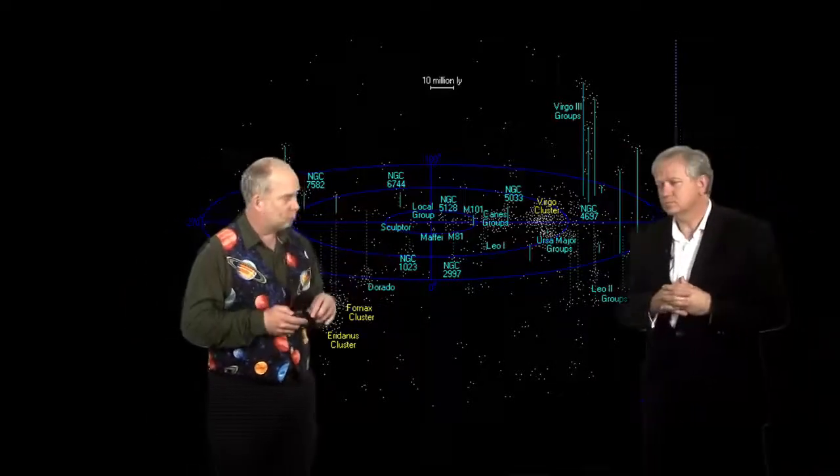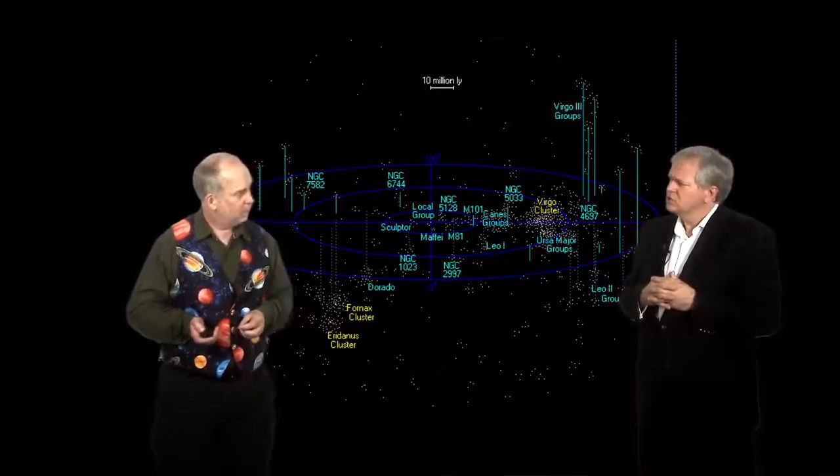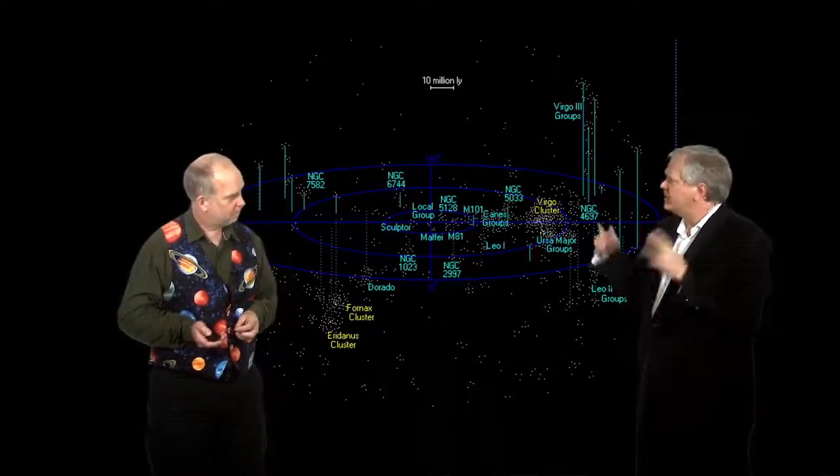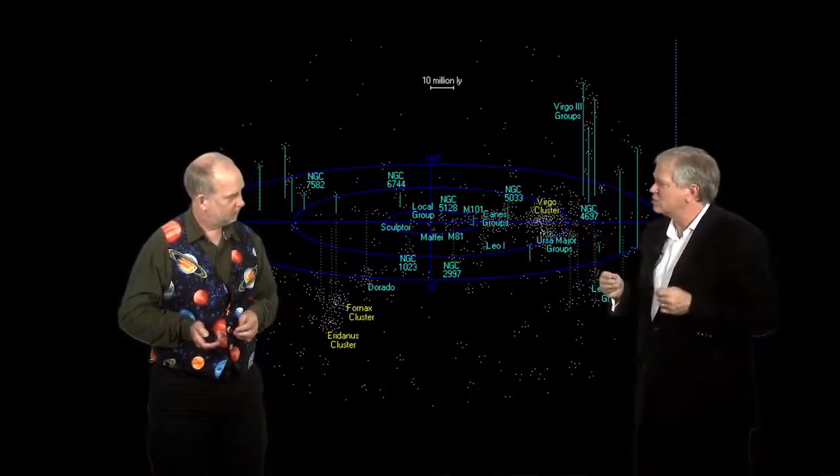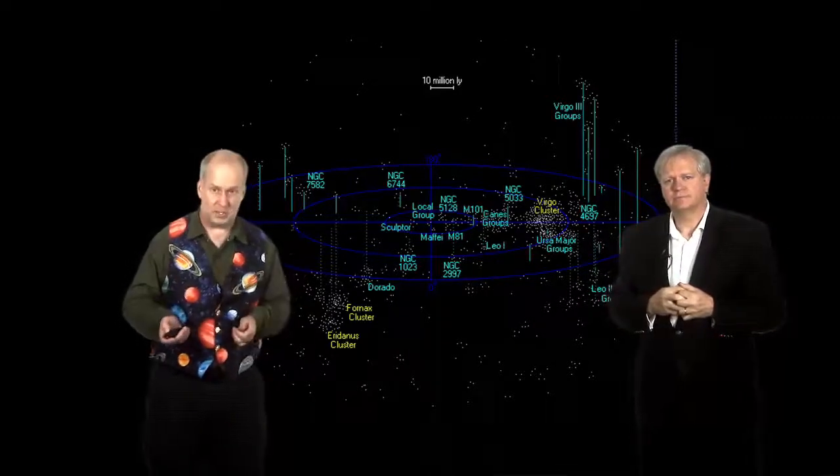So, small scales, peculiar motions dominate. Big scales, not really. The expansion of space dominates. So, let's think about how we can take all the information in the sky and put it together and try to measure the force of gravity. Let's use these peculiar motions to tell us how strong gravity is.